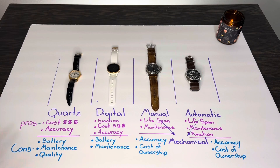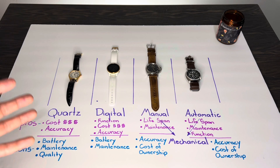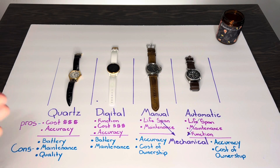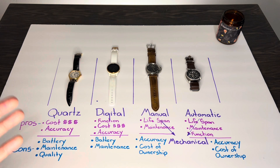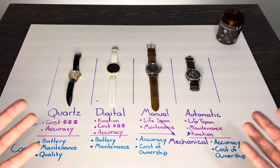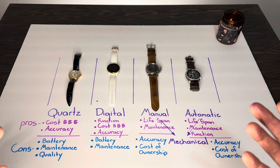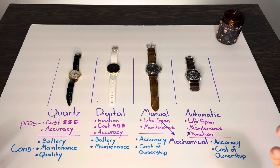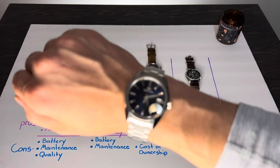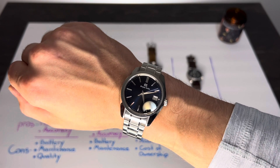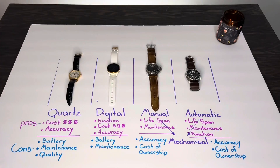There are drawbacks to all of these watches. For quartz, the biggest drawback is the battery — it has a lifespan, and so does the movement. These mass-produced quartz watches will at some point reach the end of their life. Another drawback is quality; the majority of quartz watches available to the public just aren't that great — not to be confused with the Grand Seiko, which uses a very high-quality quartz movement designed to be serviced.